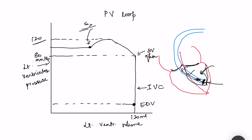The volume at this point is the end systolic volume, approximately 50 ml. Then diastole begins — the ventricles start relaxing — but again both the AV valves and aortic valves are closed. With relaxation, the pressure starts falling tremendously, and this is the phase of isovolumetric relaxation.